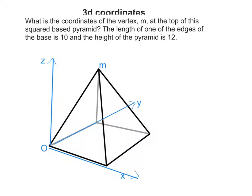The question at the top says, what is the coordinates of the vertex M? Here's M, right, the top of this square base pyramid. It tells me the length of one of the edges of the base is 10, and the height of the pyramid from the very centre to the top is 12.